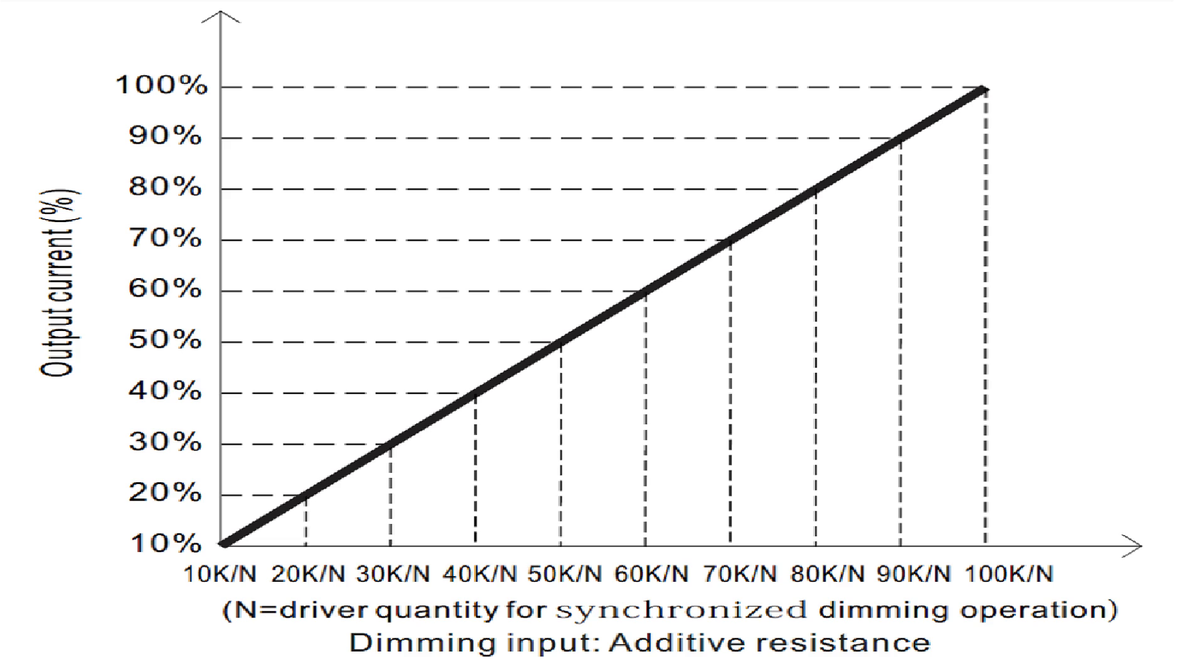To find this formula, just pull up any Meanwell HLG spec sheet. Scroll down to the third or fourth page and you'll see the three-in-one dimming specs. Find the one that says applying additive resistance and look at the graph. You'll see on the y-axis output current percentage from 10 to 100, and on the x-axis resistance starting from 10k divided by n up to 100k divided by n. The 100k divided by n refers to 100k ohms divided by n, which is the number of drivers you're using for synchronized dimming. So if you have a single driver for 100% current output, you need 100k ohms divided by one driver equals 100k ohms. If you've got two drivers for 100% output, you need 100k divided by two drivers equals 50k ohms.